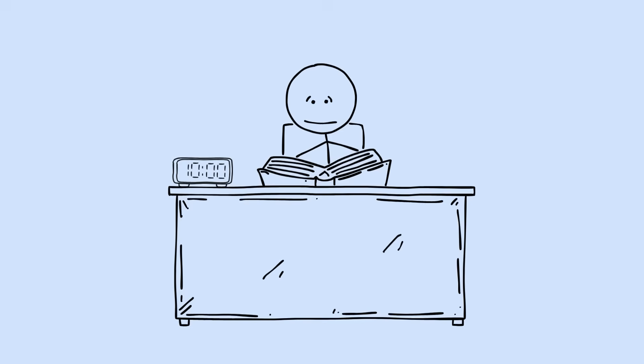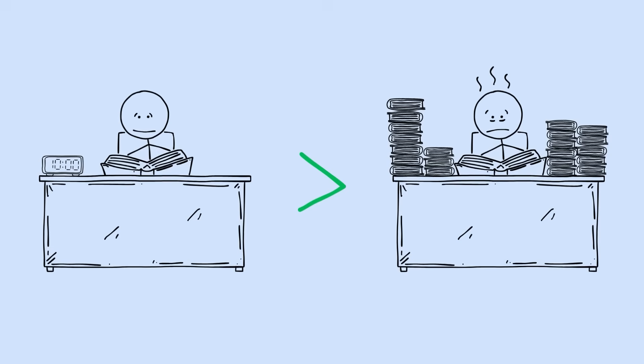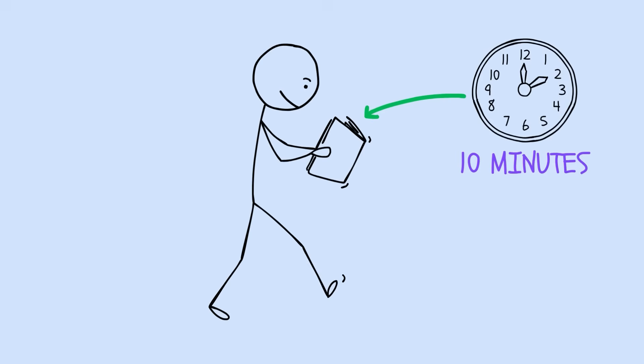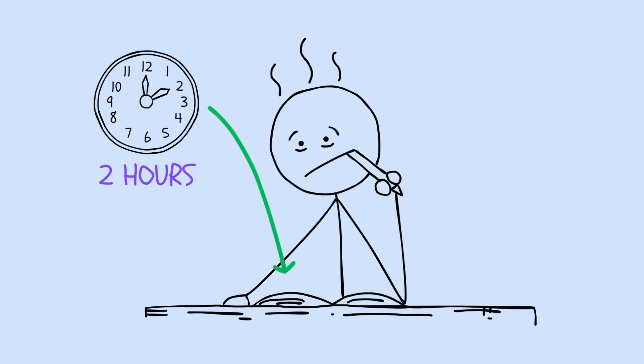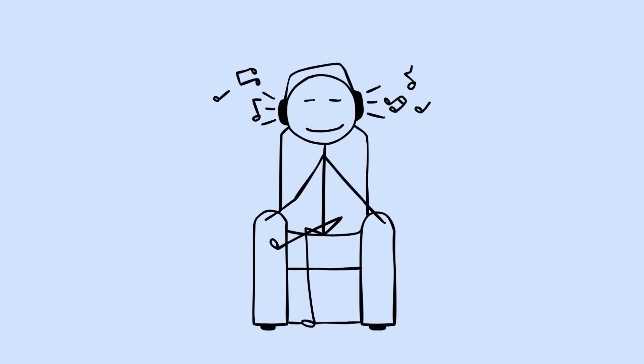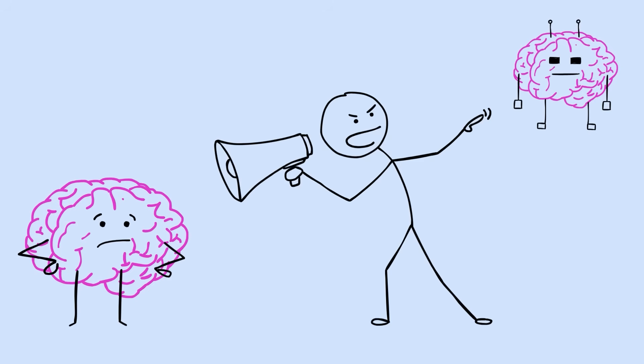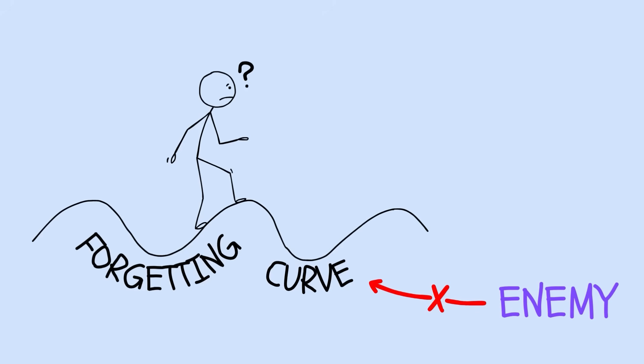Here's the kicker. Timing beats duration every single time. Studying something for one hour today and reviewing it for 10 minutes tomorrow creates more lasting memory than studying for two hours straight. We organize our Spotify playlists better than our study sessions and somehow expect our brains to perform like a perfectly curated algorithm. The forgetting curve isn't your enemy. It's your teacher.